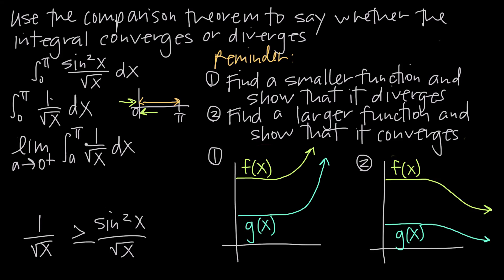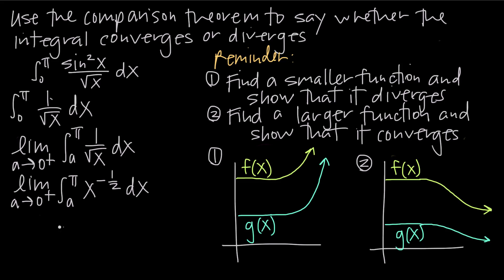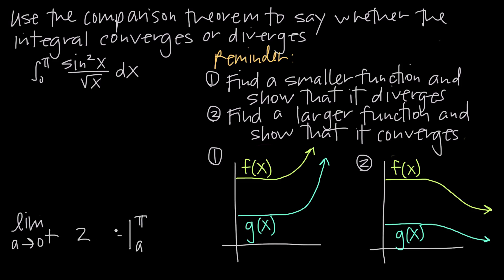Now we evaluate the integral. Remember that 1 divided by the square root of x is the same as x to the negative 1/2 power, since the square root of x is x to the 1/2 and moving it to the numerator makes the exponent negative. So we have the limit as a approaches 0 from the positive side of the integral from a to pi of x to the negative 1/2 dx. We integrate by adding 1 to the exponent: negative 1/2 plus 1 is positive 1/2. Then we divide by the new exponent 1/2, which is the same as multiplying by 2, evaluated from a to pi.